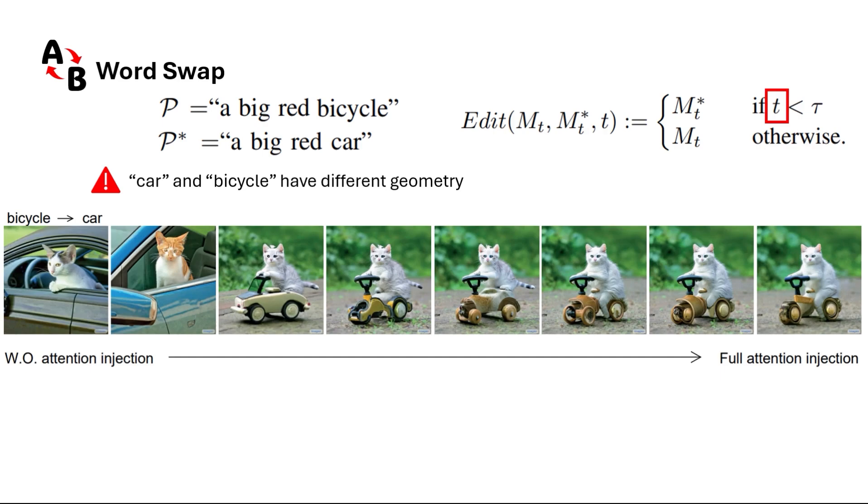Using this simple idea, we can see how the choice of hyperparameter tau matters. Clearly when we don't inject the attention map at all and only rely on the random seed, we see that it creates a cat in a car but it doesn't look like the cases where the cat was riding a bicycle initially.